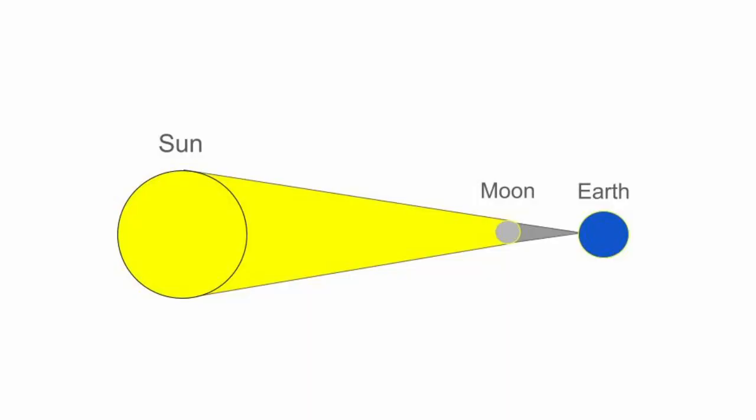The moon orbits the Earth roughly every 27.3 days. At some point during that orbit, it will come between the Earth and the sun. So why don't we see solar eclipses all the time? Well, we sort of do — there are between two and five solar eclipses every year somewhere on Earth, but most of those are partial. Earth gets treated to a total solar eclipse roughly every 18 months, but they seem extremely rare because most of those are over water, which covers about 70% of the Earth's surface. But still, shouldn't we see an eclipse every time the moon comes between the sun and the Earth, so roughly once a month?